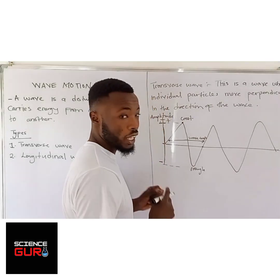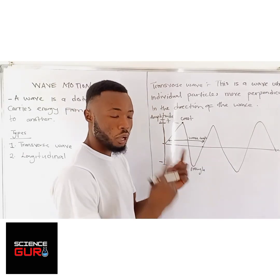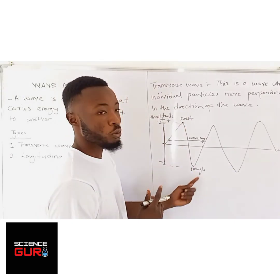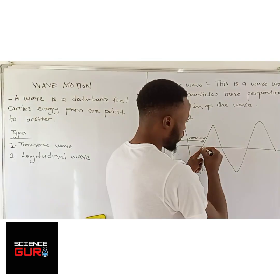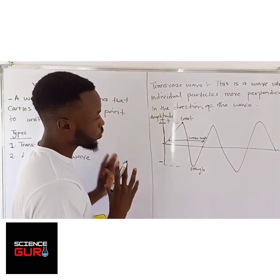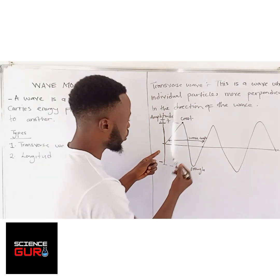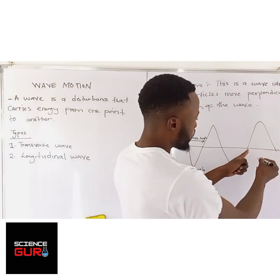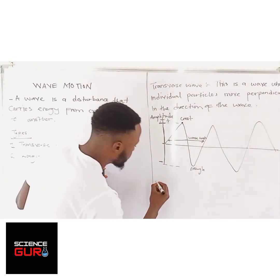Now we have to know how to count the number of waves present. A wave makes a complete oscillation when a crest and a trough have passed. So from this point up to this point is one wave, from that point to the next is another wave, and the remaining portion is half a wave. So the number of waves present is 2.5.